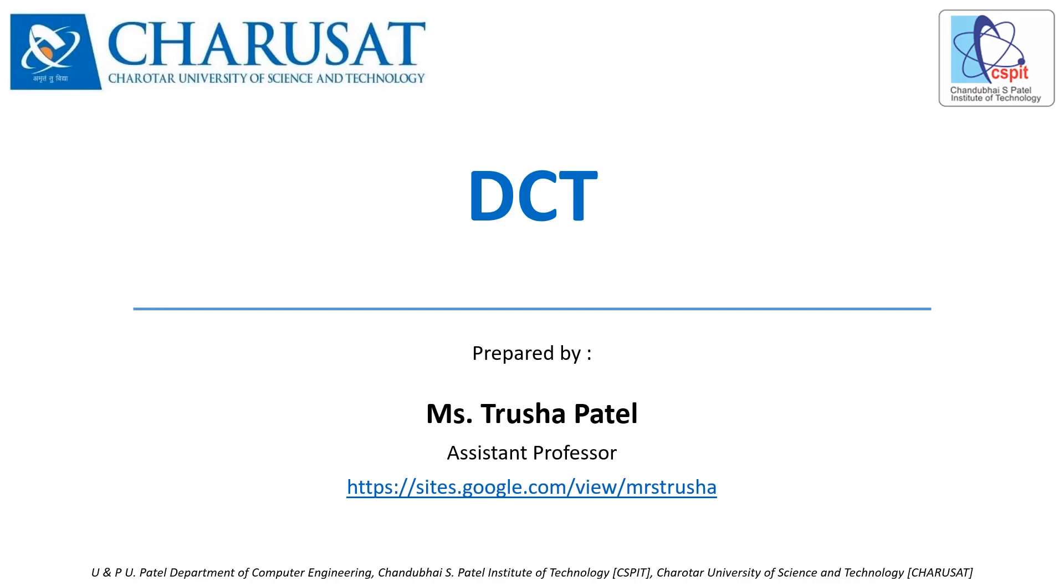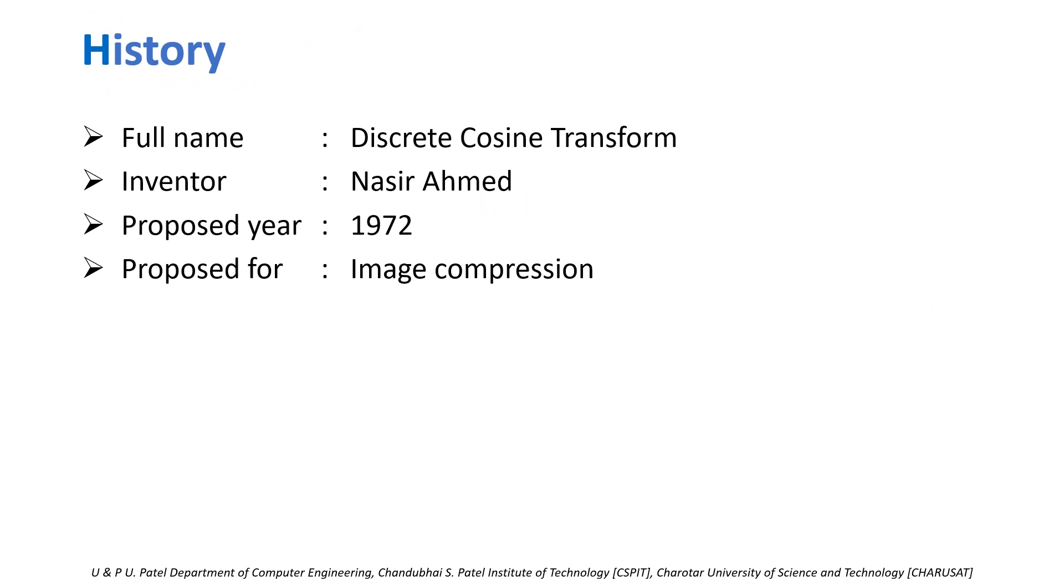Hello all, this is Trusha Patel. I am going to talk about DCT. The full form is discrete cosine transform. Nasir Ahmed invented it in 1972. It was proposed for image compression and DCT is widely used for lossy image compression algorithms.